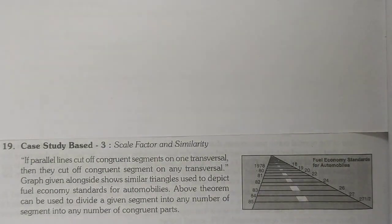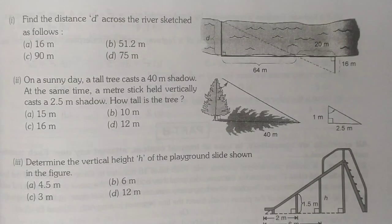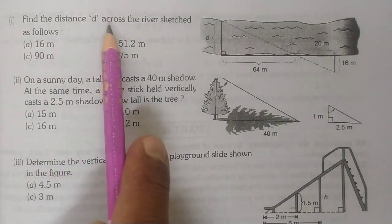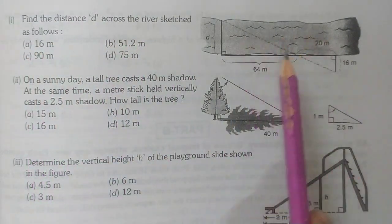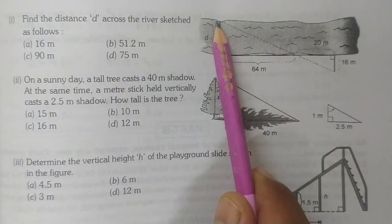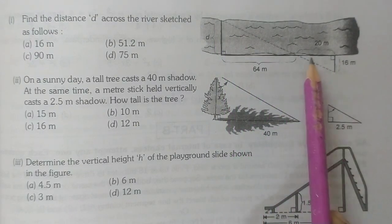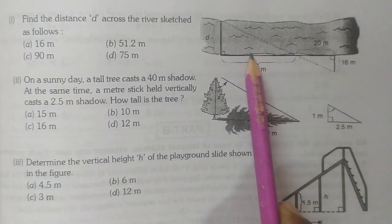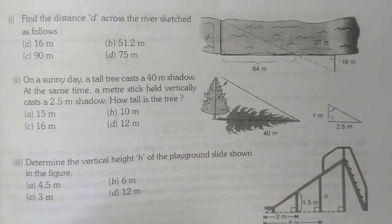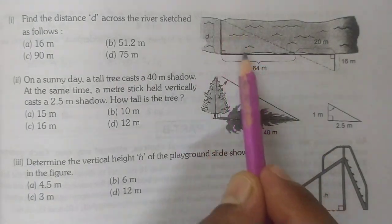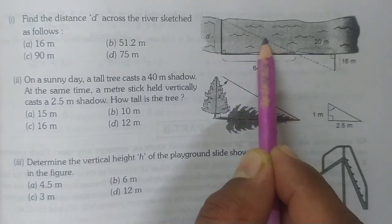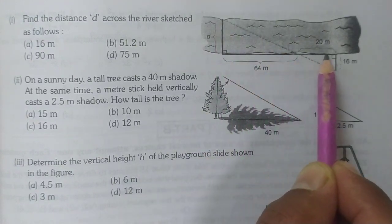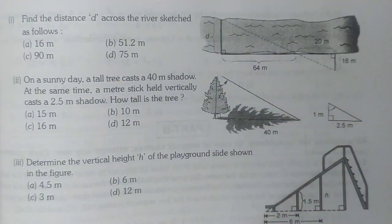First question is: find the distance d across the river sketched as follows. This is the river and this is distance d. This is 16, this is 20, and this is 64. We need to find out d. Again, this triangle and this triangle are similar by AA.